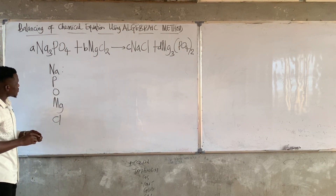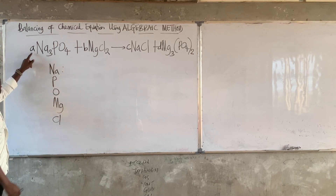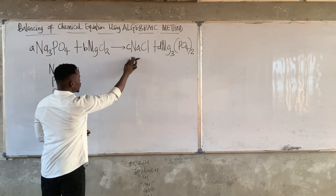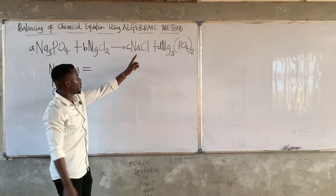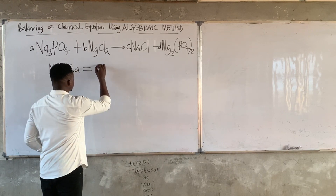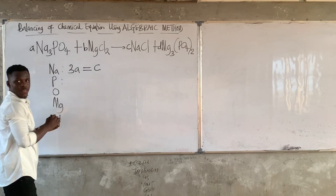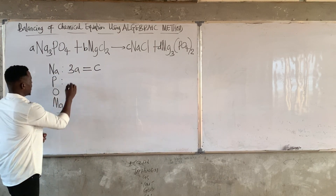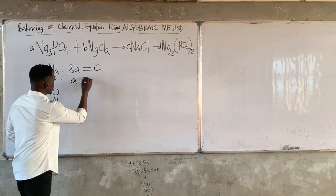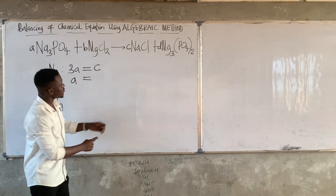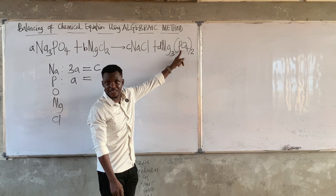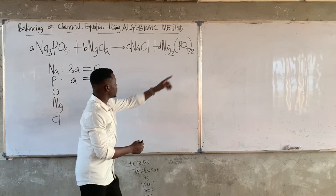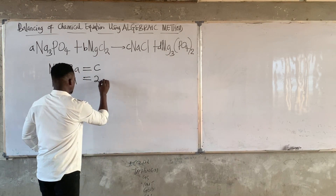Step 2 is to write balanced equations for each element. For sodium: there are 3 on the left, so 3A. There is no sodium in the middle compound. On the right-hand side, sodium is 1, so 1 times C = C. Equation 1: 3A = C. For phosphorus: it is 1 on the left, so 1 times A = A. On the right-hand side, phosphorus is 1 inside the bracket with a 2 outside, so phosphorus becomes 2D. Equation 2: A = 2D.